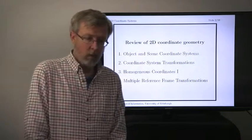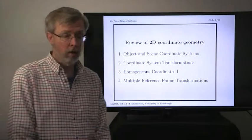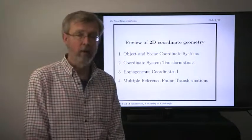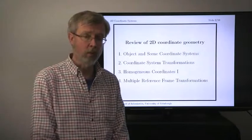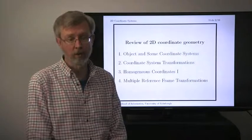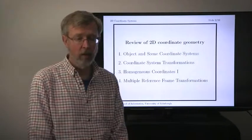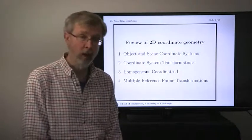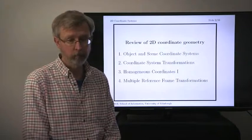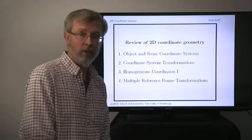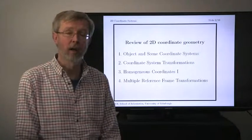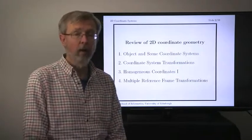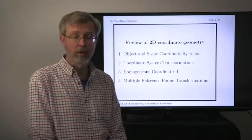The place to start is with coordinate systems. Normally when you think about your images you'll think about a coordinate system, but here we're going to need multiple coordinate systems, and that's going to include the object and scene coordinate systems as well as the image coordinate system. If you have multiple coordinate systems, you need to have ways to relate those coordinate systems together, and that's where we're going to talk about coordinate system transformations.